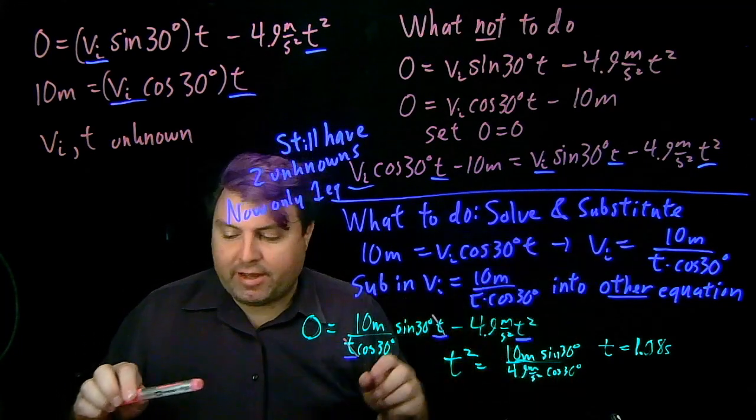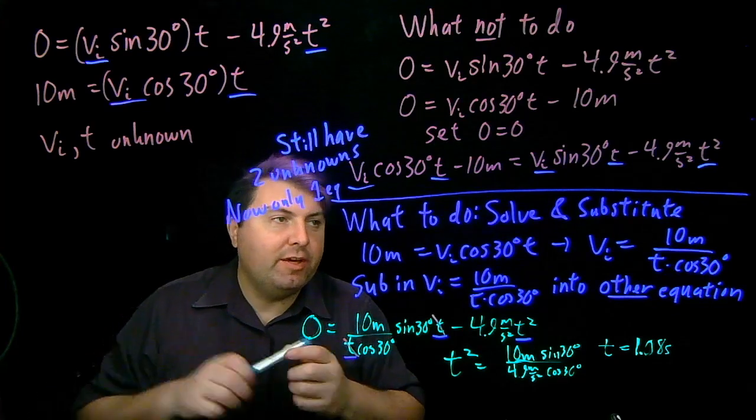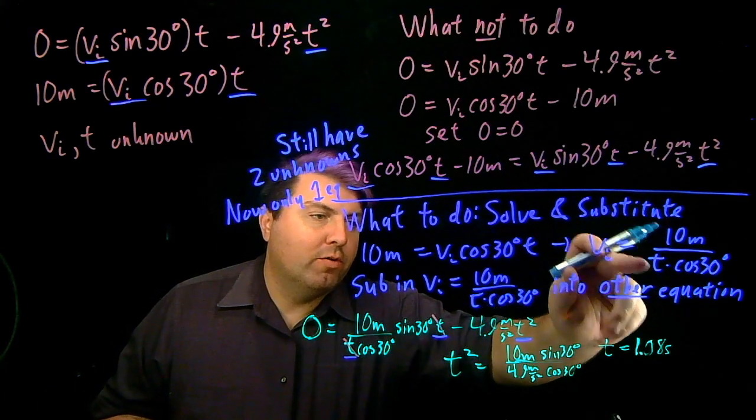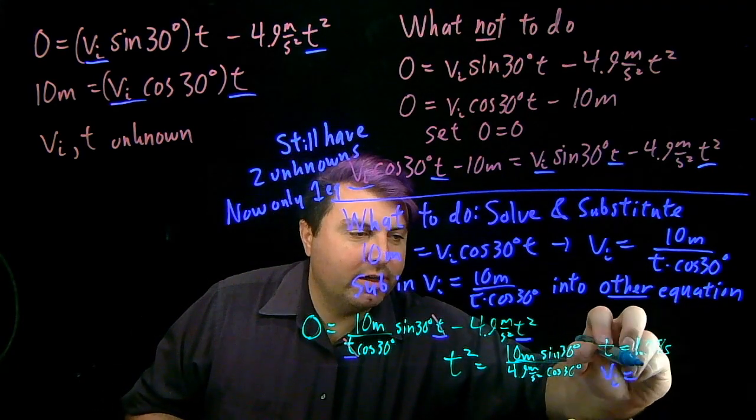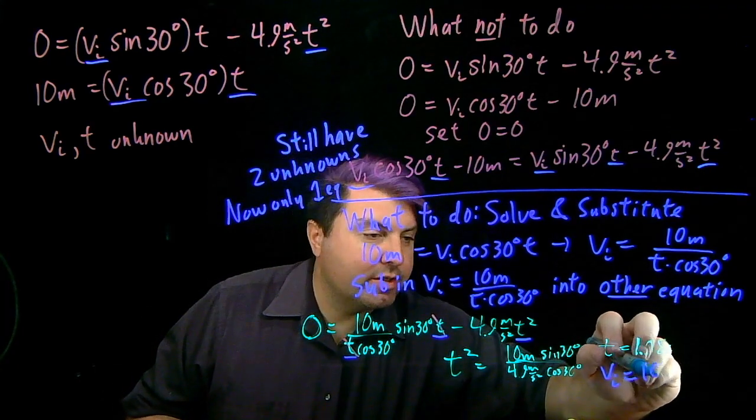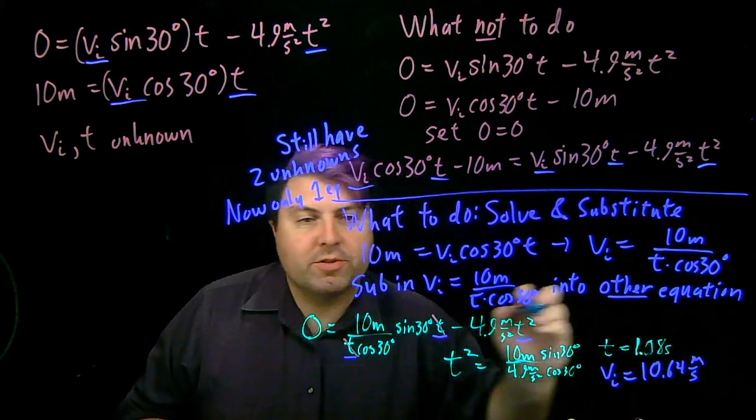Now, once I have that, I can go back and solve for my v. My v is 10m / (1.08s × cos 30°). And so I would get then my vi is 10.64 meters per second.